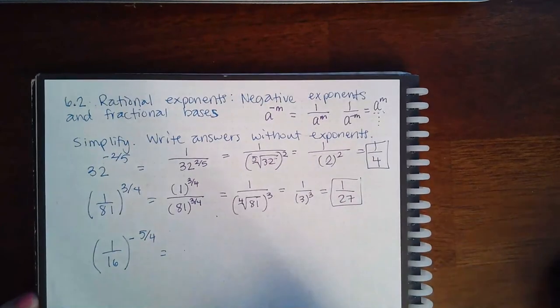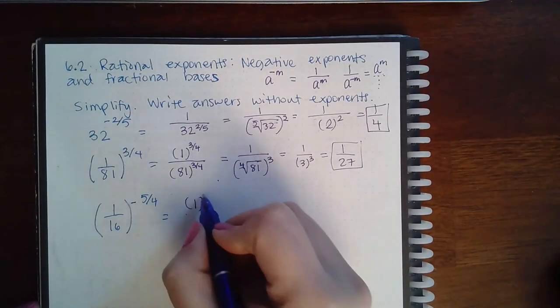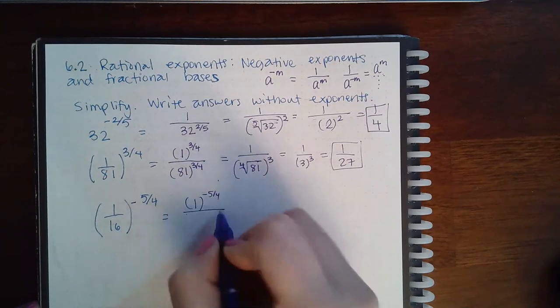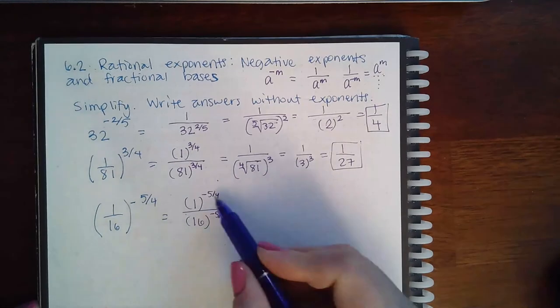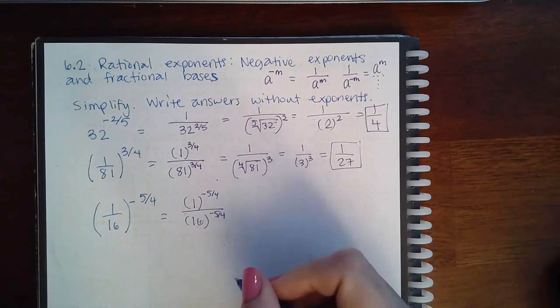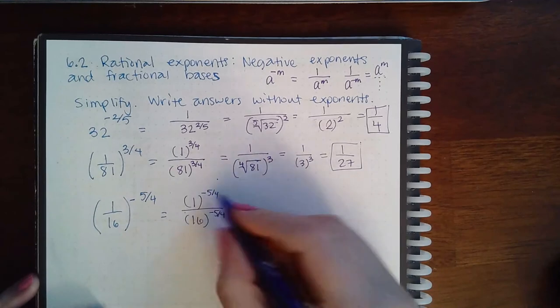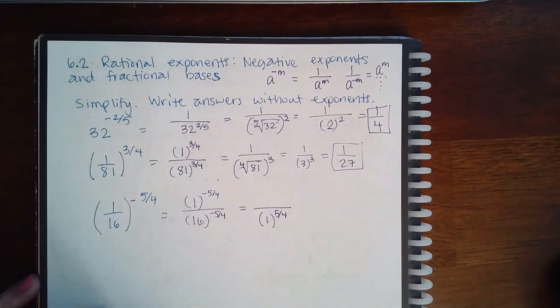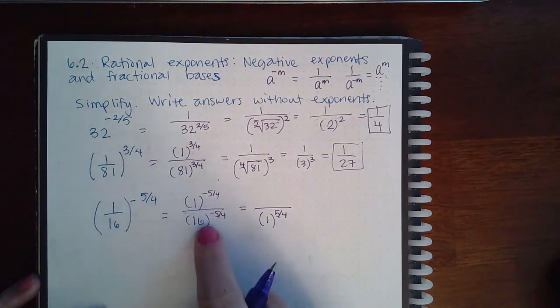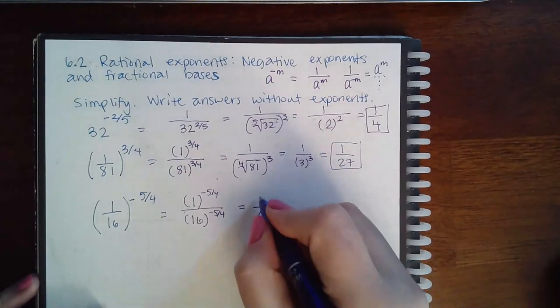Now here's the same thing. You have 1 to the negative 5/4 and 16 to the negative 5/4. So before I can evaluate the exponent, I have to deal with the negative first. If this is negative in the numerator, it means it's going to go down to the denominator to become a positive exponent. And if this is a negative exponent in the denominator, it's going to have to move to the numerator to become positive.